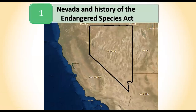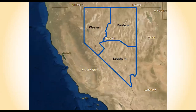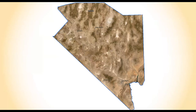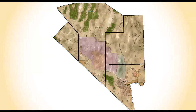Nevada Department of Wildlife is split into three regions. Kevin works out of the southern region from Las Vegas, which contains mostly the Mojave, Great Basin, and Colorado River Basin — made up of north and south running valleys. Many species in these valleys are remnants of post-ice-age lakes and rivers, having evolved to this fairly dry landscape.